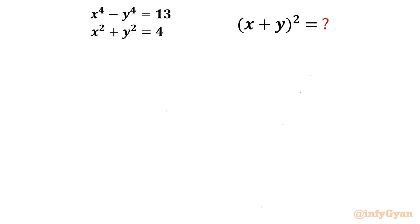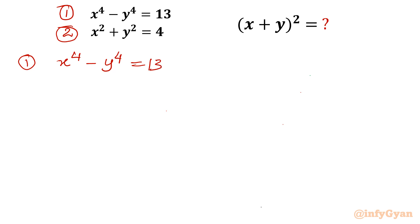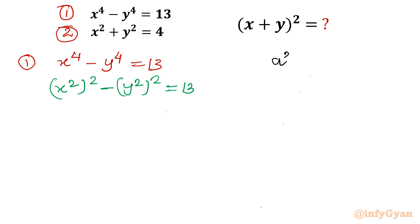Let's get started by writing equation numbers 1 and 2. Consider equation 1: x⁴ minus y⁴ equals 13. I can rewrite x⁴ as (x²)² and y⁴ as (y²)², giving (x²)² minus (y²)² equals 13. Now the identity for difference of two squares applies: a² minus b² equals (a plus b)(a minus b).